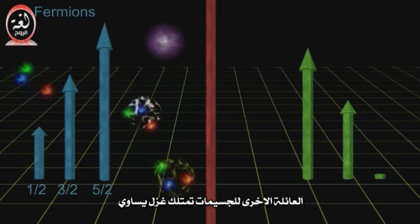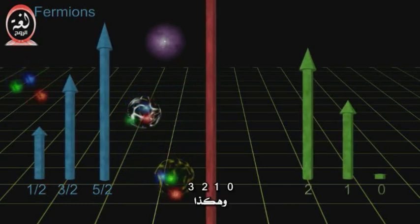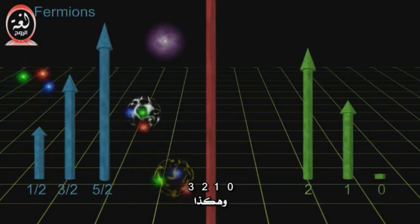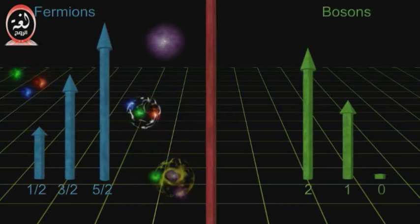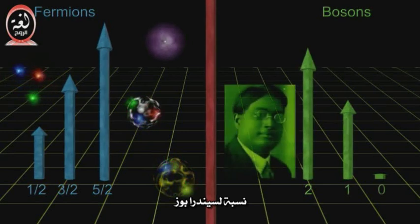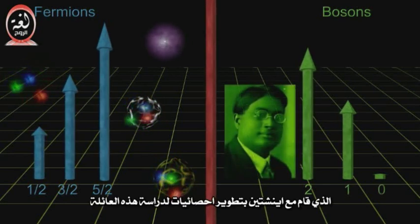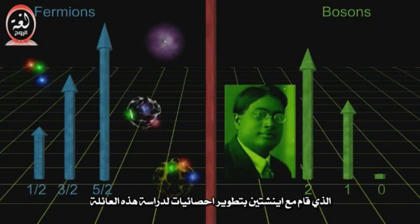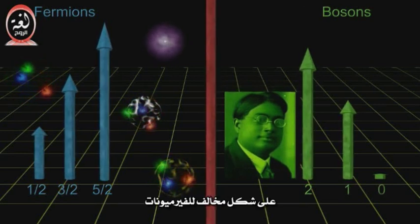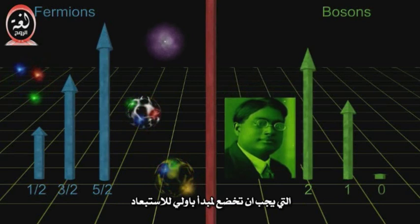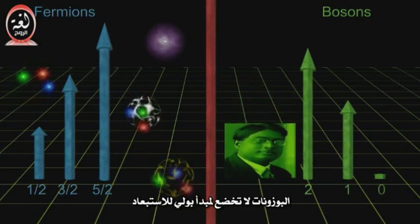The other family of particles have spin equal to zero, one, two, three, and so on. They are called bosons, after Satyendra Bose, who along with Einstein developed the statistics for dealing with this family. Unlike fermions, which must obey the Pauli Exclusion Principle, bosons do not.